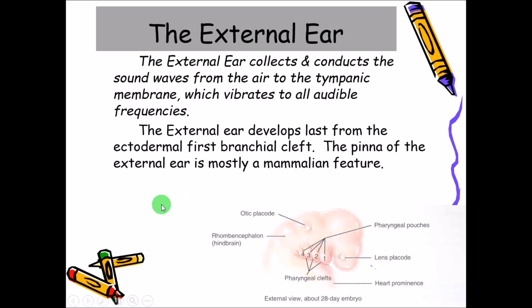If you remember the pharyngeal arches, here are the pharyngeal pouches — the first, second, third, fourth, and sixth. Between the pouches there will be the clefts. Between the first and second pharyngeal pouches will be the pharyngeal cleft. So this first pharyngeal cleft, or branchial cleft, will give rise to the external ear.